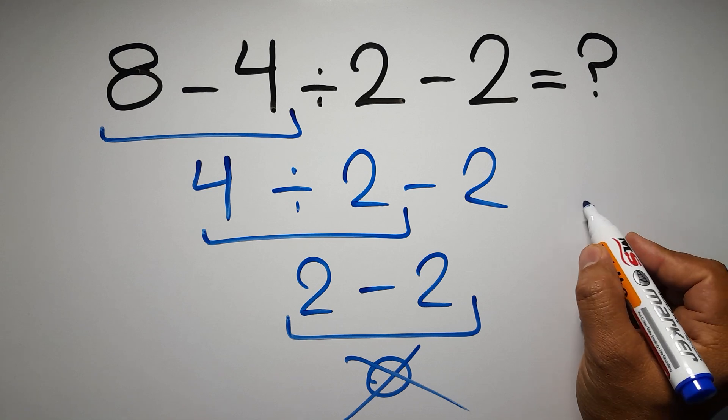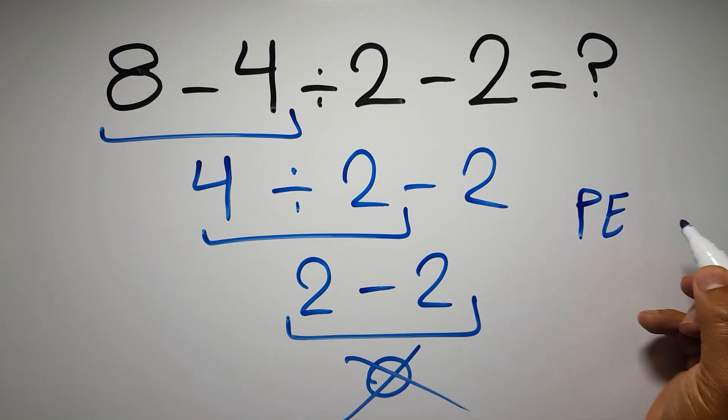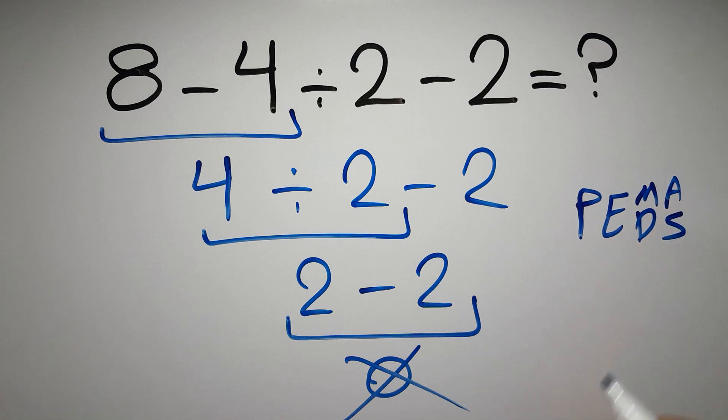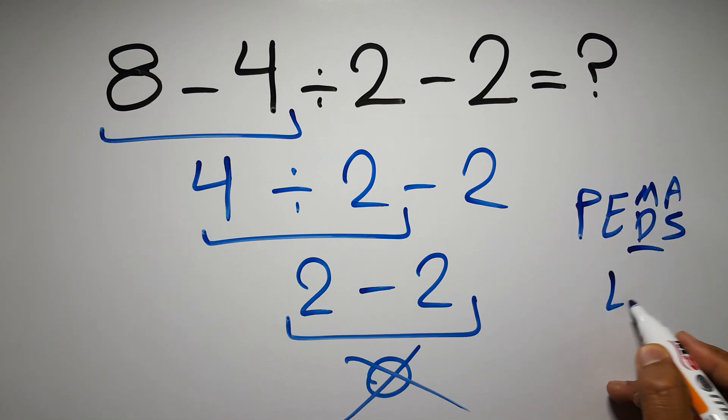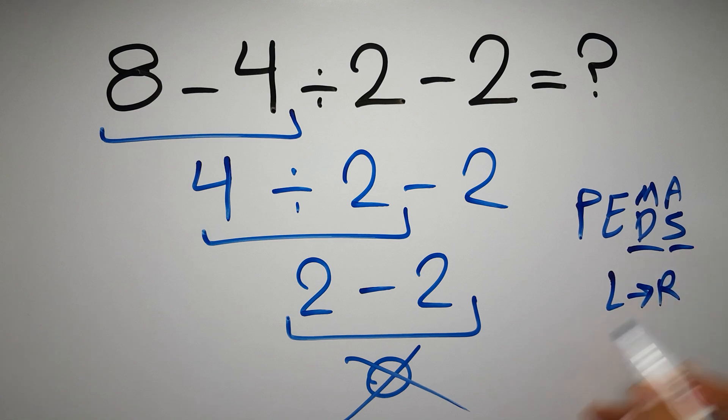We have to do parentheses, then exponents, then multiplication or division, and finally addition or subtraction. Remember that multiplication and division have equal priority and we have to work from left to right. The same applies to addition and subtraction.